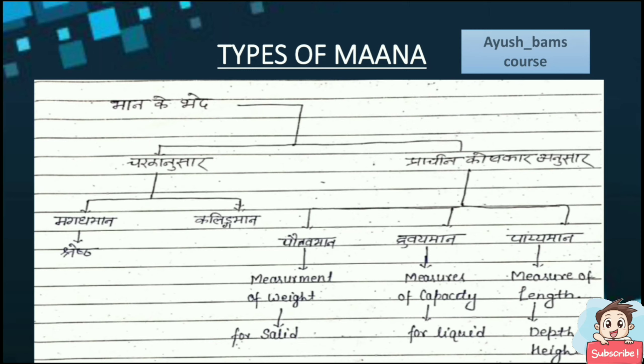According to the ancient scholars, this is divided into three types: Pautava Mana, Dhruvaya Mana and Paiya Mana. Pautava Mana means measurements of weight which is in solid form. Dhruvaya Mana means measuring a capacity which is in the form of a liquid, whereas Paiya Mana is the measurement of length, that is either depth or height.